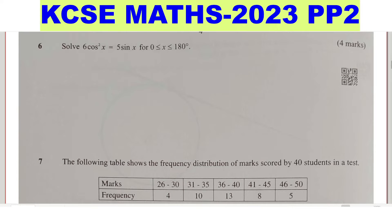Question 6: solve 6 cosine squared of x equals 5 sine of x, where x is greater than or equal to 0 and less than or equal to 180. The first thing you're going to do is make everything uniform. Since you're dealing with cosine and sine, you can't solve that equation with both — you either convert all to sine or all to cosine. The easier one is to make them all sine.